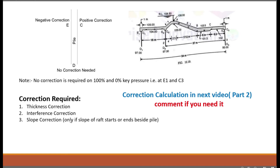The types of corrections performed at key points are thickness correction, interference correction, and slope correction. Slope correction is only required if the slope of the raft starts or ends beside the pile — in this pile only, slope correction is needed because there is a slope nearby. The correction calculation for these key pressures will be uploaded in the next video.